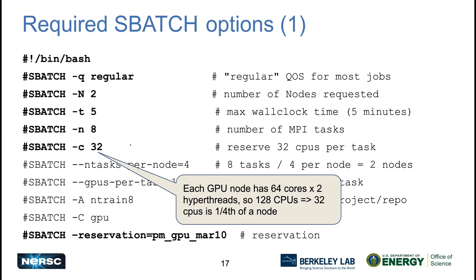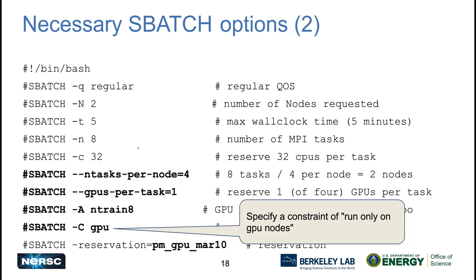If you had 64 ranks per node, you'd set -c to 2, mapping one core or two logical CPUs per MPI rank. The other key settings when running on GPU nodes are GPUs per task — the number of GPUs you want available per task — and the constraint, which should be set to 'gpu' so you specifically request a GPU node. For this training, set the reservation flag to PM_GPU_March10 to get through the queue quickly using our dedicated nodes.